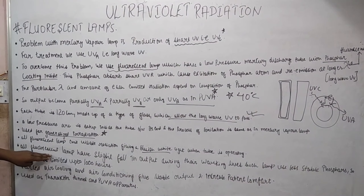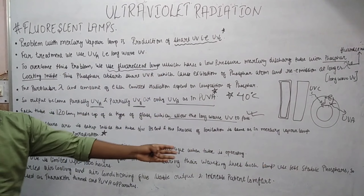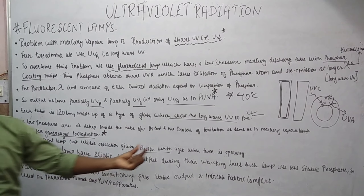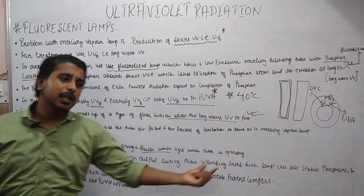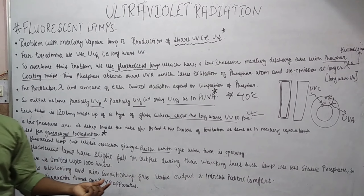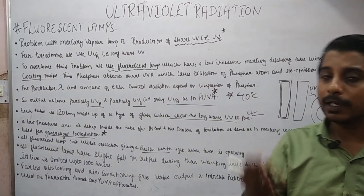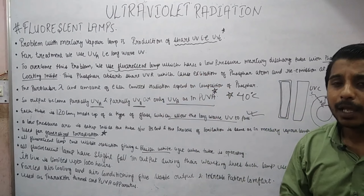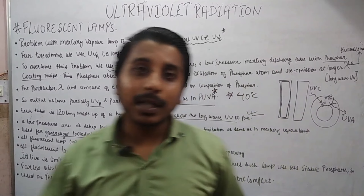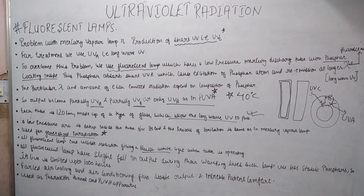All fluorescent lamps have a slight fall in output during their working life. The reason is that some fluorescent tubes use less stable phosphor, so they can only be used up to 1000 hours. Some fluorescent tubes have a sharp drop in output because they are made up of unstable or less stable phosphor, and after 1000 hours we need to replace them.